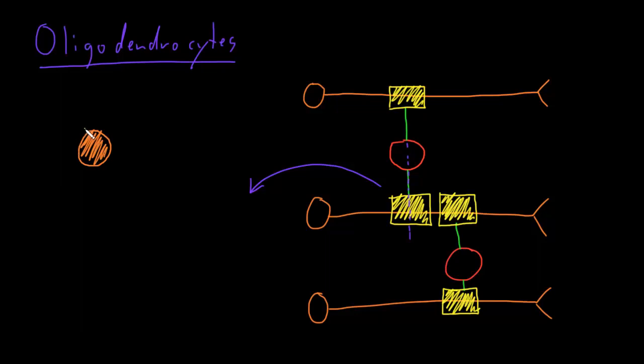And the myelin sheath is just the membrane at the end of the process of the oligodendrocyte that's wrapped very thinly around the axon many times, like a roll of tape.